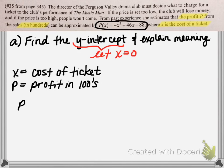That's essentially the same as finding p of 0. When you do your substitution — substituting 0 into our function — we'll get an output value of negative 88. So the y-intercept is negative 88. But what does this actually mean in the context of the problem?